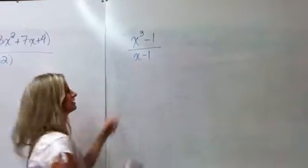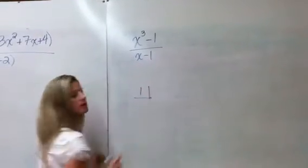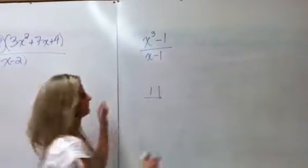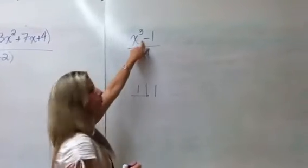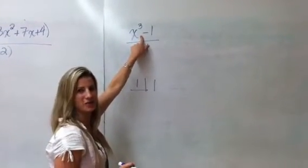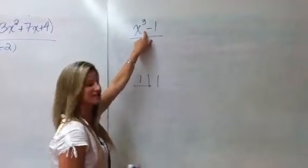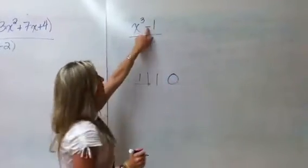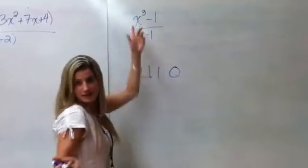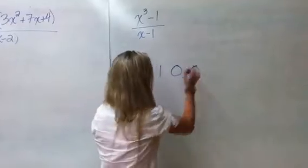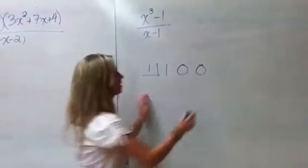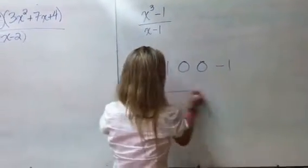So I'm going to show you what to do there. So again, we take the opposite of this, so positive 1. Then we write all the coefficients, so 1. Now, what's the coefficient of the x squared term? It's actually 0, because it doesn't exist. So 0, and then what's the coefficient of the x term? Well, that doesn't exist either. So we have to put a placeholder there. And then we have our constant of negative 1.